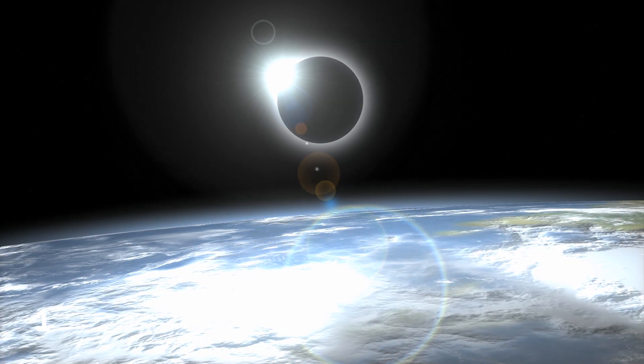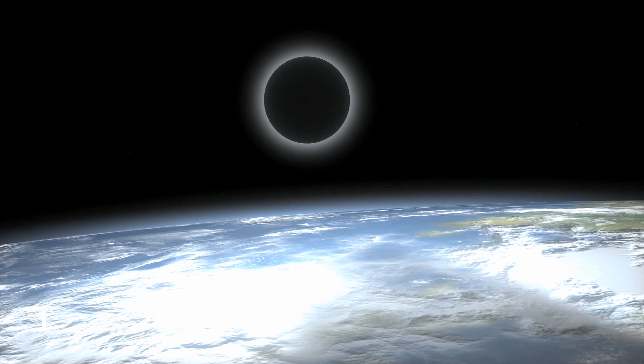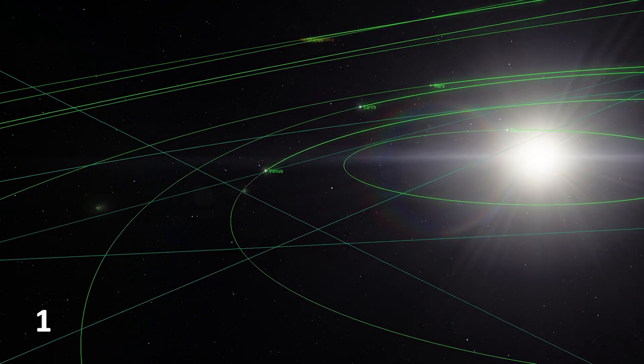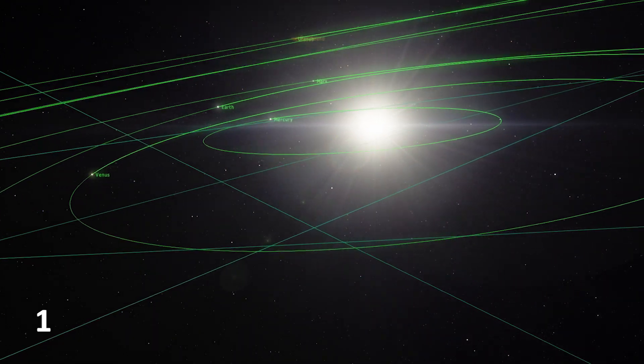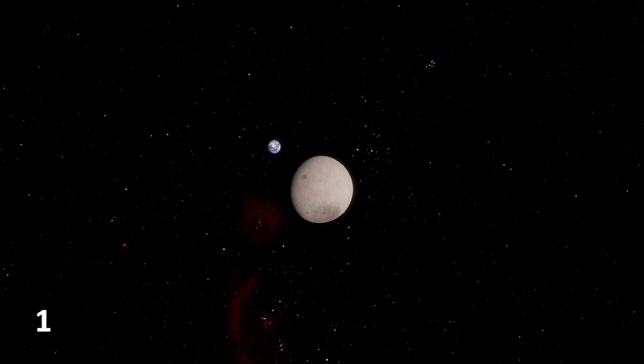During a total eclipse, the Moon perfectly covers the Sun. Our star is exactly 400 times the size of the Moon, but the Moon is 400 times closer to Earth.